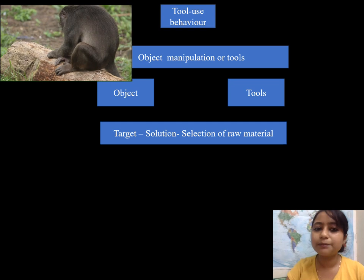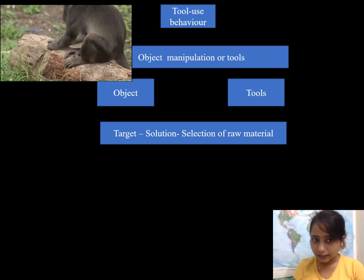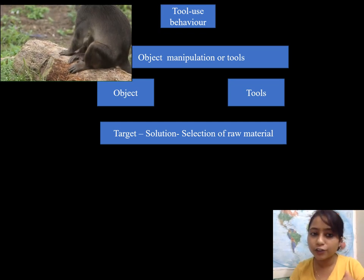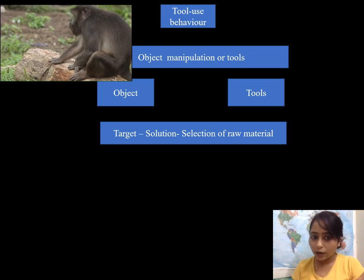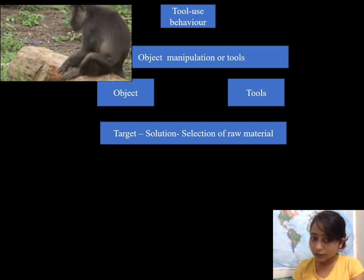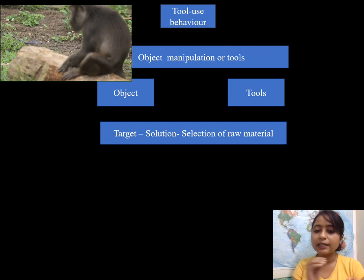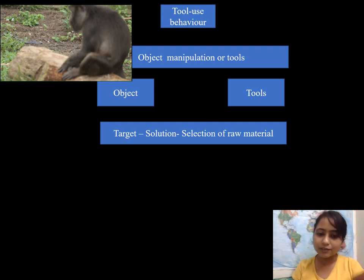With this let's leap into the mind of the monkey. In this particular video you can see that the monkey is rolling food over a surface. The monkey has to consume the food by rolling it against the surface. Why does it do that? Because the surface of the food is very rough and has to be smoothened before oral consumption. So it has a target, it comes up with a solution, and then it selects the raw material.